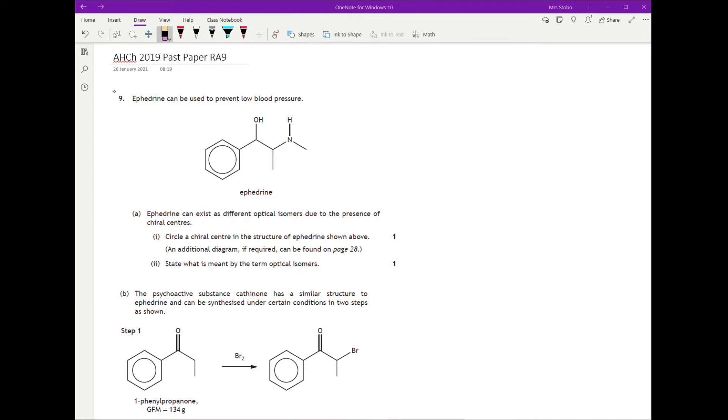Okay, question nine. Ephedrine can be used to prevent low blood pressure. You have a structural formula of it. And then you're told that ephedrine can exist as different optical isomers due to the presence of chiral centres. Circle the chiral centre.